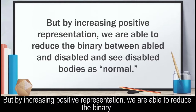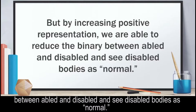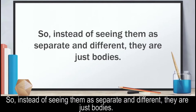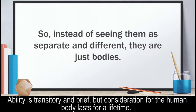But by increasing positive representation, we are able to reduce the binary between abled and disabled and see disabled bodies as normal. So instead of seeing them as separate and different, they are just bodies. Ability is transitory and brief, but consideration for the human body lasts for a lifetime.